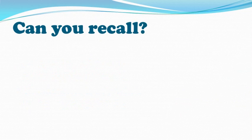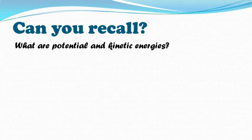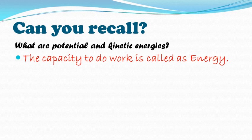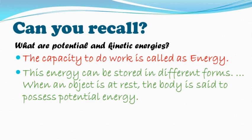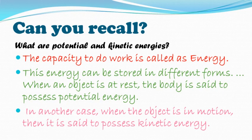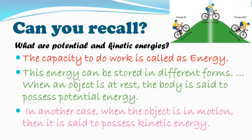Now let's answer: what are potential and kinetic energies? The capacity to do work is called energy. When an object is at rest, it is said to possess potential energy. When the object is in motion, it is said to possess kinetic energy — for example, a moving cycle has kinetic energy.